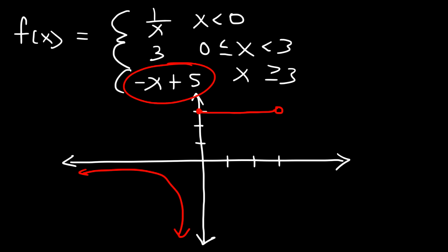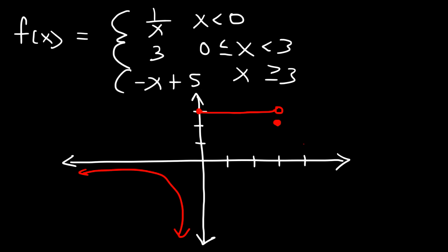When x is equal to or greater than 3 we have negative x plus 5. Plugging in 3 gives negative 3 plus 5 which is 2, so we have a closed circle at 3 comma 2. The next point: plugging in 4 gives negative 4 plus 5 which is 1. We can see it's going down because it has a slope of negative 1. If we plug in 5, negative 5 plus 5 is 0, so that's the x-intercept of this portion of the piecewise function — and so we can see it's going down like that.